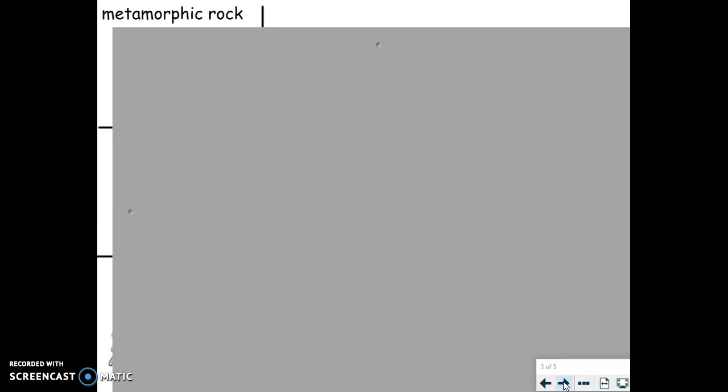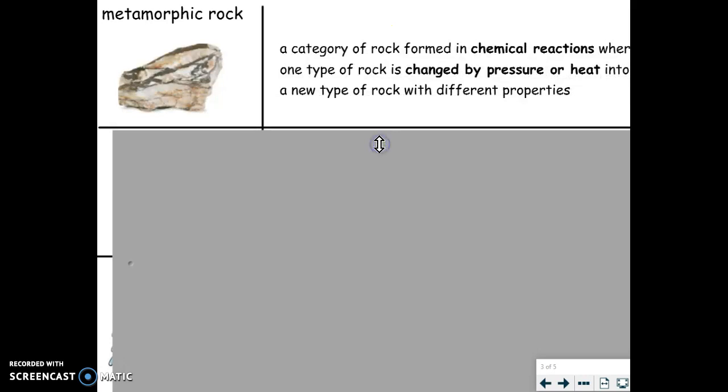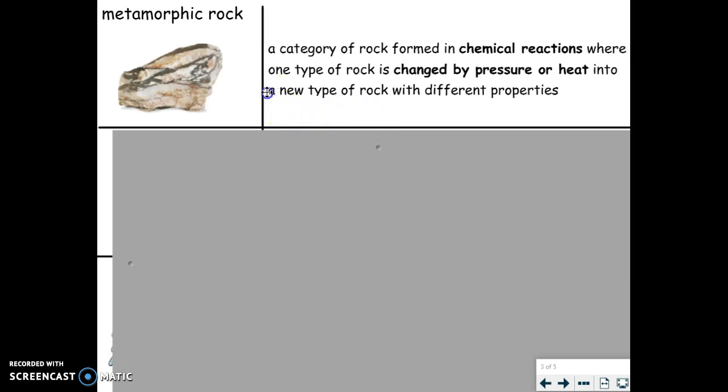Your next card is metamorphic rock. The definition that you will put on the line side of your index card is: a category of rock formed in chemical reactions where one type of rock is changed by pressure or heat into a new type of rock with different properties. You should pause the video as you need to so that you can copy the definition and draw your picture. When you are ready, you should press play and go to the next word.